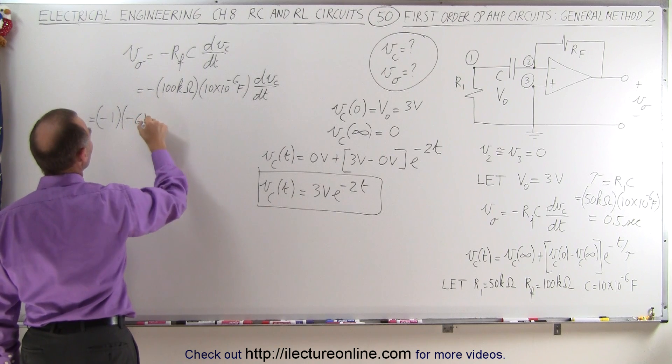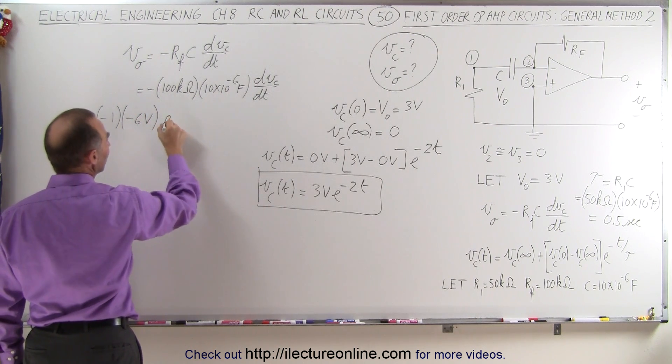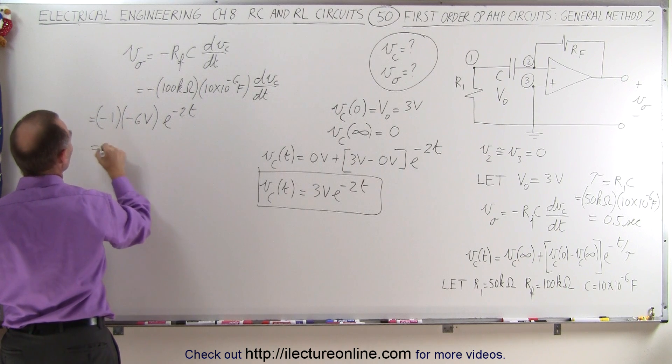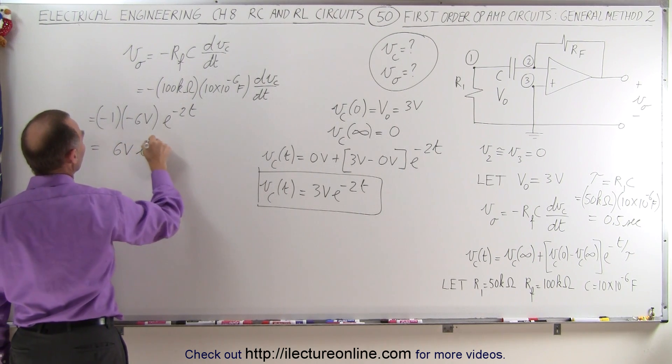Which is minus 6 volts times e to the minus 2t, and minus times minus is plus, so this is equal to 6 volts times e to the minus 2t.